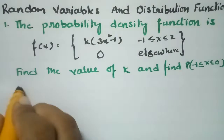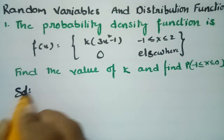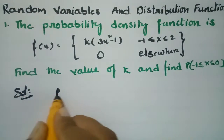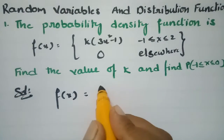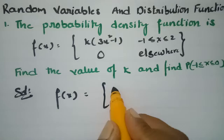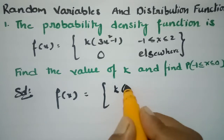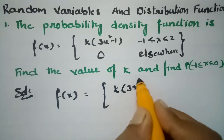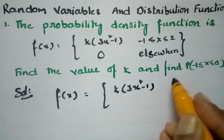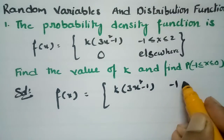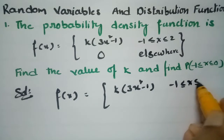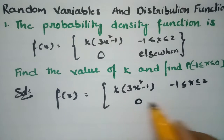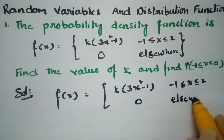The probability density function is f(x) = k(3x² - 1) where x lies between -1 and 2, and 0 elsewhere.